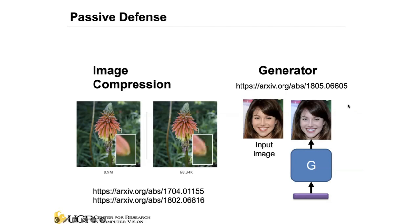We can also use a fancier approach: image generation. For an input image — which may be original or attacked — we input it to a generator to produce a filtered or processed image. We want to ensure the image retains the same semantic content, but hopefully the generation process serves as a filtering function — removing some noise or changing specific patterns injected into the original image. This is a generator-based approach to filtering.